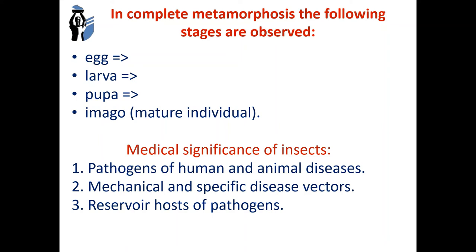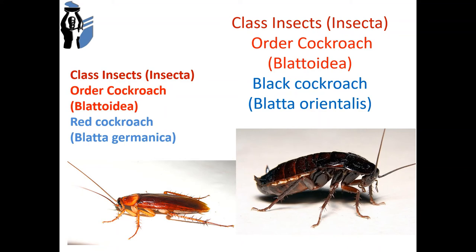The medically important orders include: Blattodea, Hemiptera, Phthiraptera, Siphonaptera, and Diptera. Class Insecta, order Blattodea — species red cockroach and black cockroach. Cockroaches are large insects, dwellers of human houses; sometimes cockroaches can bite humans. The main harm lies in the spoilage of food products. They bring microorganisms into human food and are mechanical vectors of different diseases. Their feces contain pathogens of typhoid fever, dysentery, tuberculosis, cysts of protozoa, and eggs of helminths.